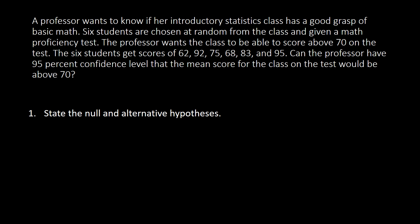The six students get scores of 62, 92, 75, 68, 83, and 95. Can the professor have 95% confidence level that the mean score for the class on the test would be above 70?